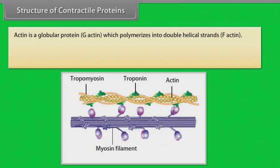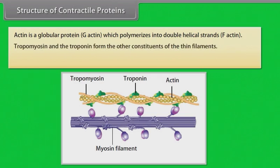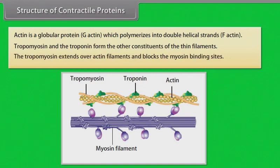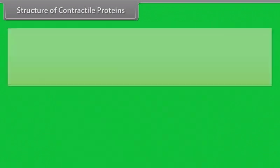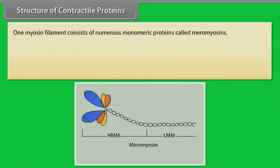Structure of contractile proteins: actin is a globular protein, G-actin, which polymerizes into double helical strands, F-actin. Tropomyosin and troponin form the other constituents of the thin filaments. The tropomyosin extends over actin filaments and blocks the myosin binding sites.